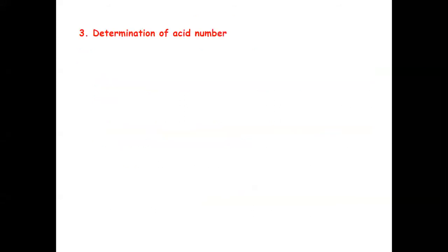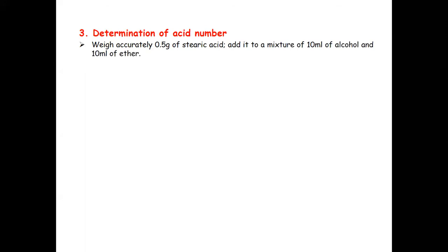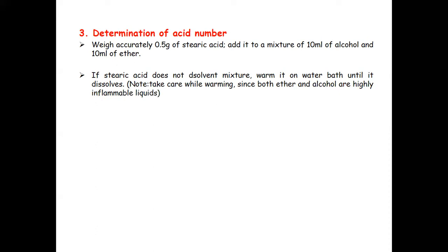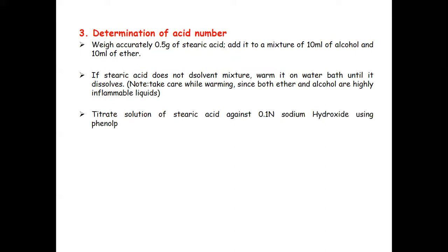Step three: determination of acid number. Take 0.5 gram of stearic acid and add it to a mixture of 10 ml of alcohol and 10 ml of ether. If stearic acid does not dissolve, warm it on a water bath until it dissolves. During heating, take care because both ether and alcohol are highly inflammable liquids. Titrate the stearic acid solution against 0.1 normal sodium hydroxide using phenolphthalein as an indicator.